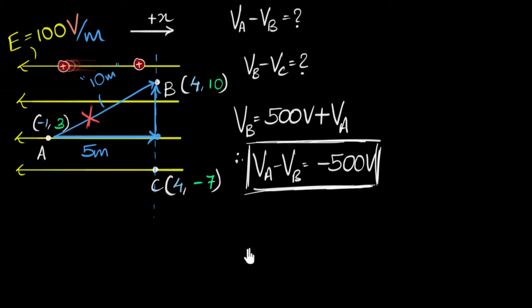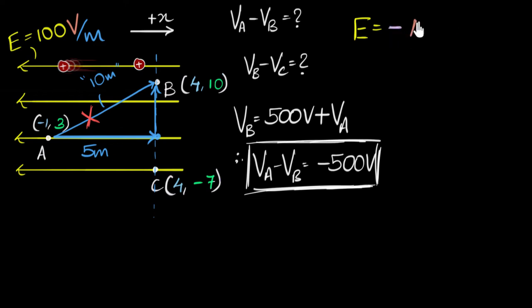Before moving to the next part, let's verify using the formula. Electric field is the negative potential gradient — it equals the negative difference in potential divided by the distance between two points along the field. Rearranging gives delta V equals negative E times delta R. Can you pause and substitute to confirm the same answer?